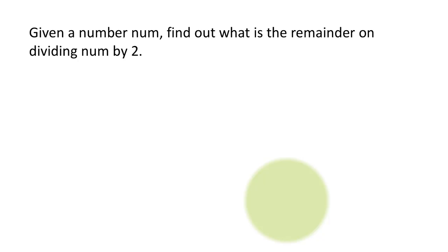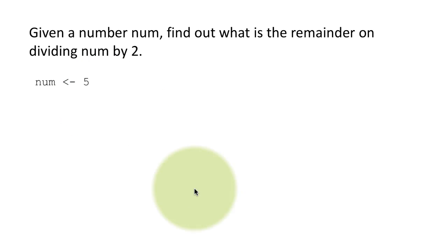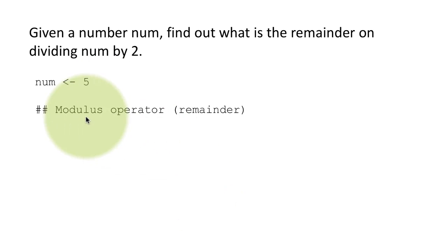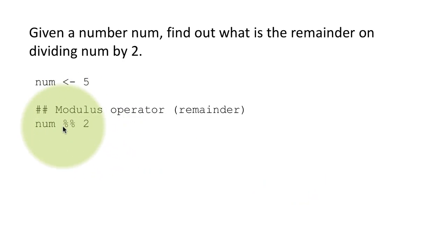Given a number m, find out what is the remainder on dividing the number by 2. So for example, if the number is 5, obviously it's an odd number. When you divide it by 2, the remainder is going to be 1. Here we are looking at the specific R operator to get the remainder — the modulus operator. I'm assigning the value 5 to num, and the modulo operator is percent percent in R. So num %% 2 gives the result 1 because that's the remainder.